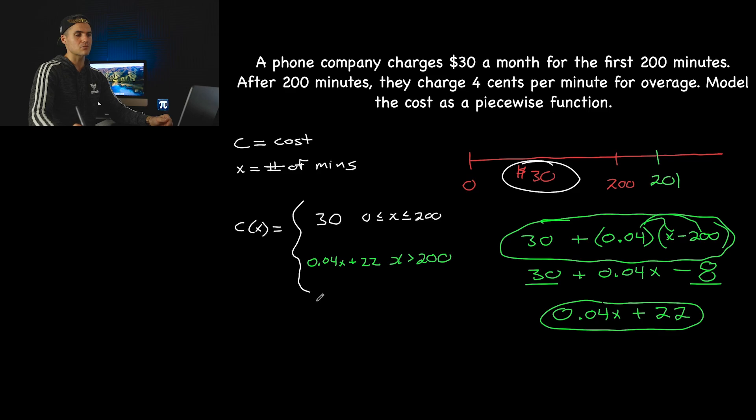And then you could test it. So remember, we said that for 201 minutes, what did we say our charge is going to be? It was going to be $30.04. So if I plug in 201 over here, 201 times 0.04 would give us 8.04. And then 8.04 plus 22 gives us that 30.04.